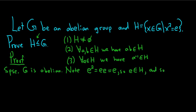And so H is non-empty. This is exactly what it means: e squared equals e for an element to be in H. If x squared is equal to e, then x is in H. Here our x is e, so x squared equals e and x is in H, but x is actually e.